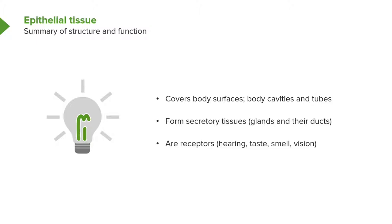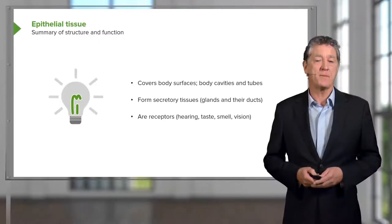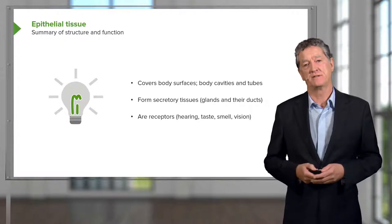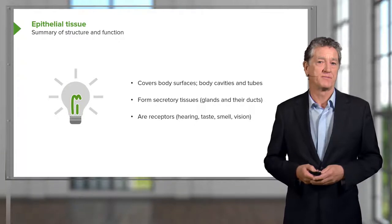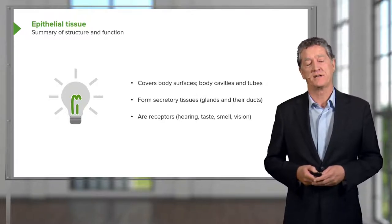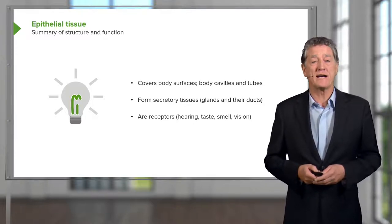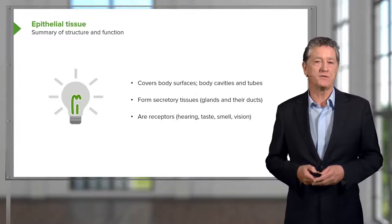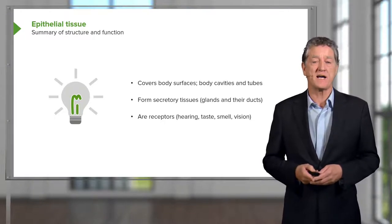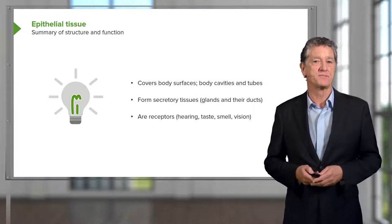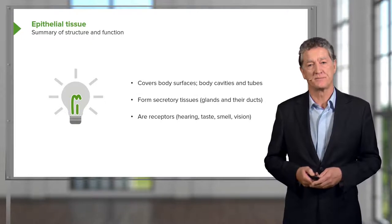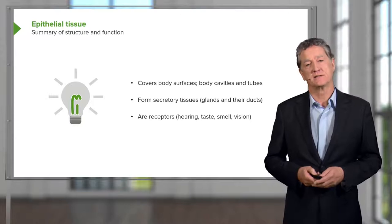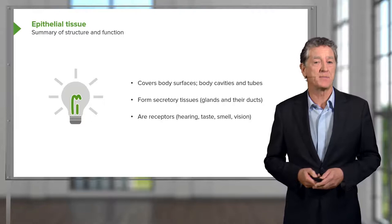Epithelia cover body surfaces — skin is an example, as the external covering of the body. Epithelia also line body cavities such as the thoracic, pleural and abdominal cavities. They line tubes, both external such as the respiratory passages and gastrointestinal tract, and internal such as blood vessels. Epithelia also form secretory tissues or glands, their ducts, and in special instances serve as receptors — as in the ear, tongue, olfactory epithelium and eye.